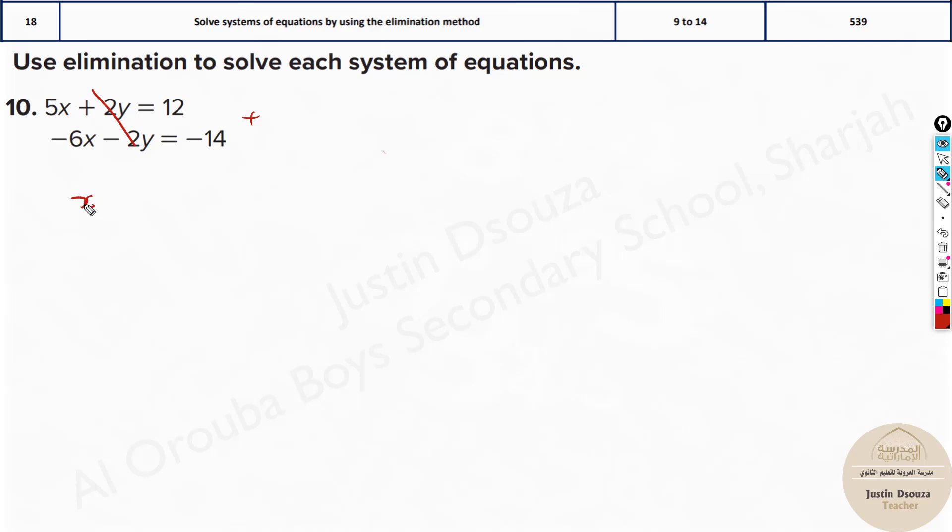Then what happens? 5 minus 6x is only minus x equals minus 2. Now negative sign cancels, dividing both sides by minus 1. You will get x equals 2. Now what about y? Substitute in any equation. I will take 5 times 2 plus 2y equals 12. The first equation is used here. It will be 10 plus 2y equals 12.